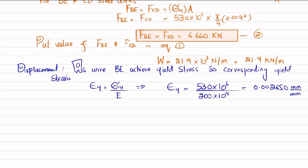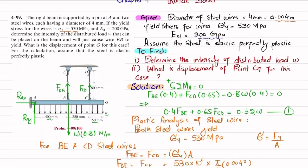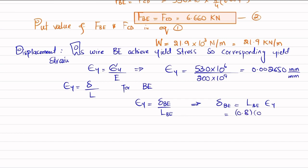We know that strain equals change in length divided by original length. For wire BE, the yield strain equals delta_BE divided by L_BE. The length of BE is 800 millimeters (0.8 m). So delta_BE = L_BE × ε_y = 0.8 × 0.002650 = 2.120 millimeters.